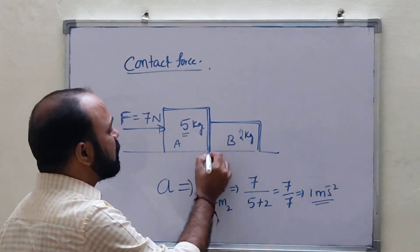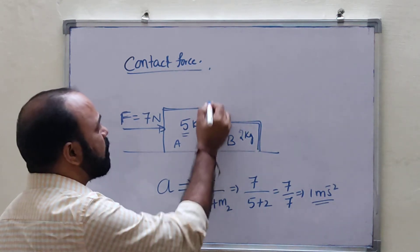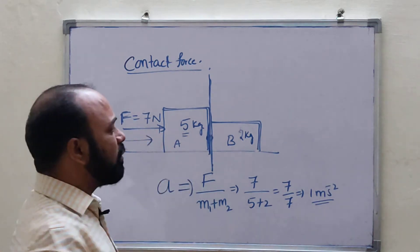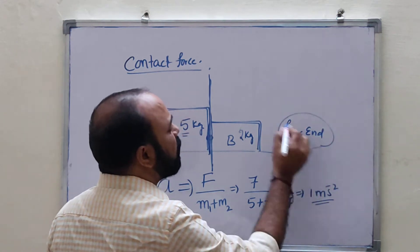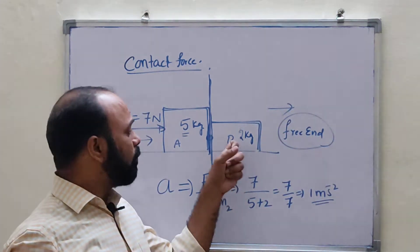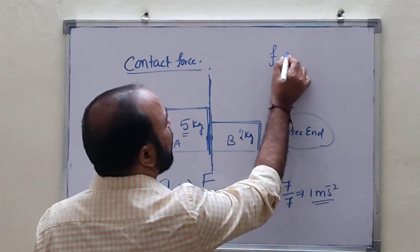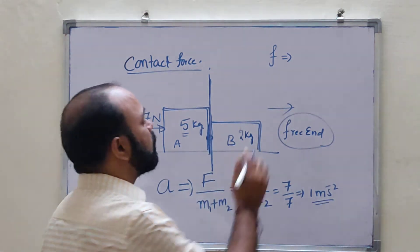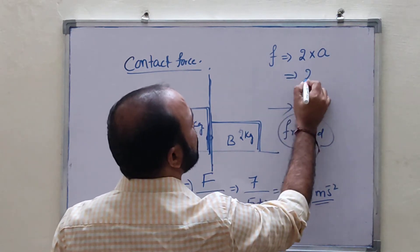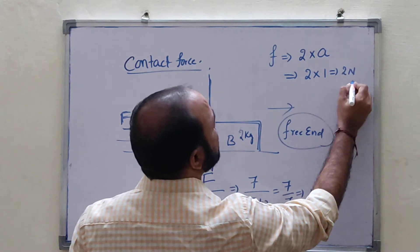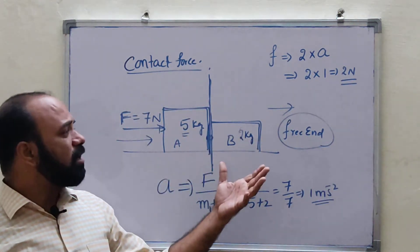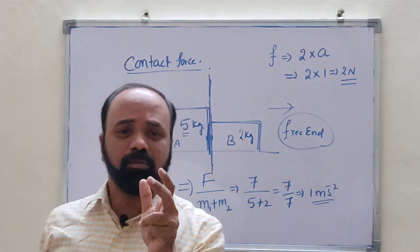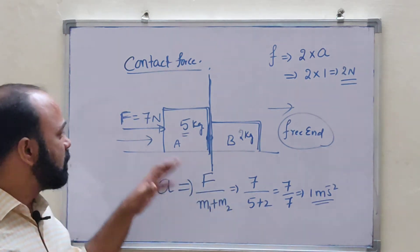Now they ask what is the contact force between these two. Draw a line at the contact surface — the common surface. The force is applied on the 5 kg block, so that is the applied-force side. The other side is called the free end. On the free-end side, how many blocks do we have? Only one block — the 2 kg block. So contact force equals 2 kg into acceleration of the system: 2 into 1 equals 2 Newtons. There is no requirement of any formula except Newton's second law, F equals MA.